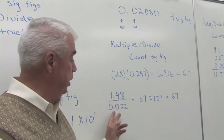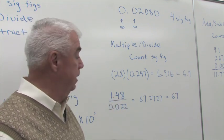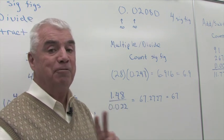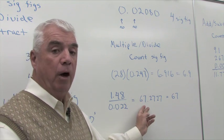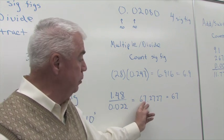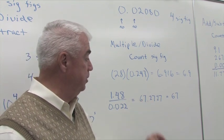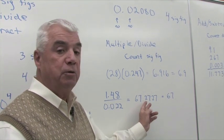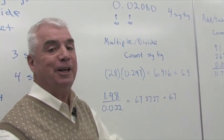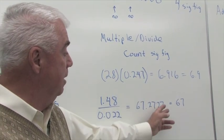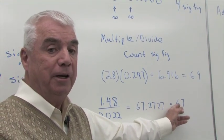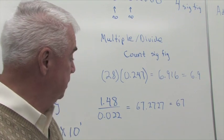Leading zeros are not significant. So my answer is going to have two significant figures. When we do the calculation, the calculator gives us the 67.2727. Actually it keeps on going, 2727 and so on. But we need to round it to two significant figures, 67.